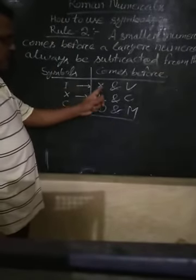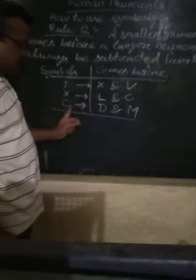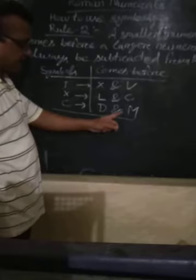I can come before X and V or V and X. X can come before L and C. C can come before D and M.